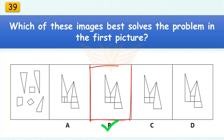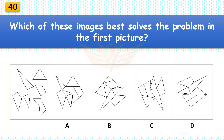Which of these images best solves the problem in the first picture? The correct answer is B. There are six pieces in the assembled puzzle, one of which is a triangle.